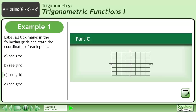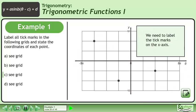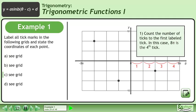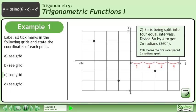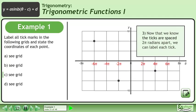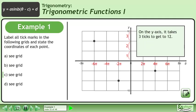Now we'll move on to part c. We need to label the tick marks on the x-axis. Count the number of ticks to the first labeled tick. In this case, 8pi is the fourth tick. 8pi is being split into four equal intervals. Divide 8pi by 4 to get 2pi radians, or 360 degrees. This means the ticks are spaced 2pi radians apart. Now that we know this, we can label each tick. On the y-axis, it takes 3 ticks to get to 12. 12 divided by 3 equals 4, so the ticks are spaced 4 units apart.